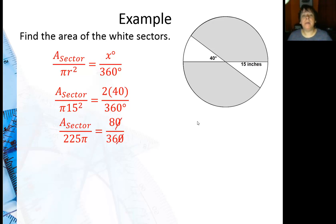Then I can multiply, simplify the zeros on the 80 and the 360, multiply both sides by 225π and I get 1800π over 36 or 50π inches squared. And that is my exact answer.